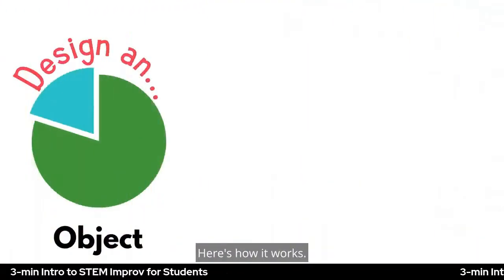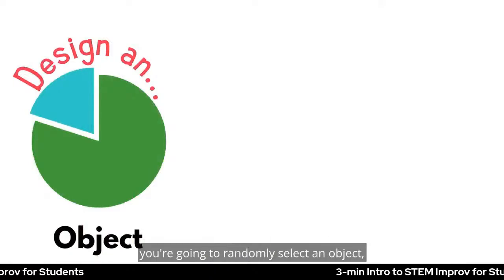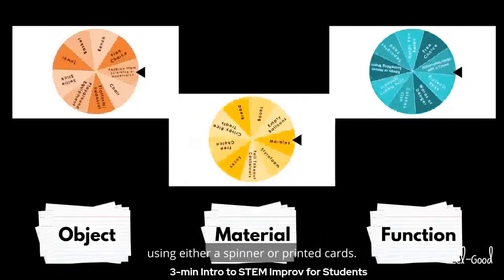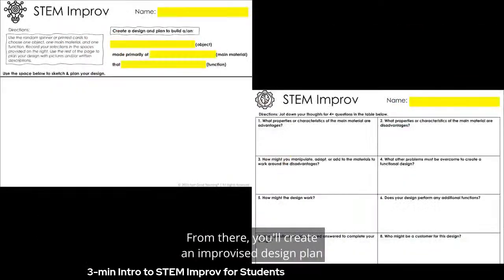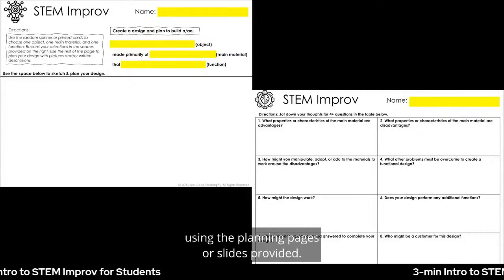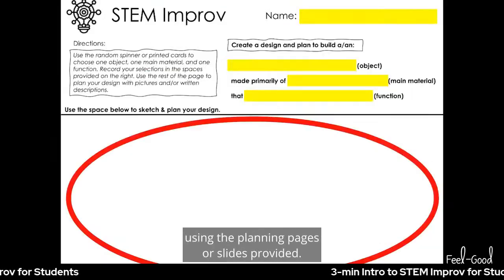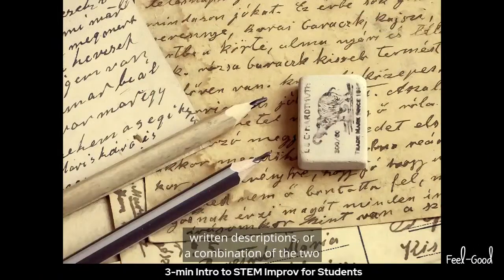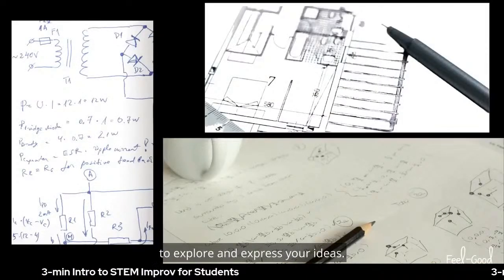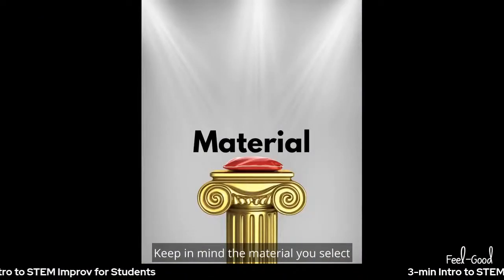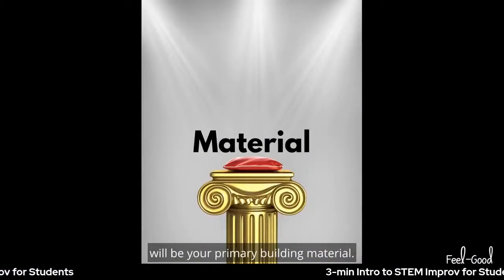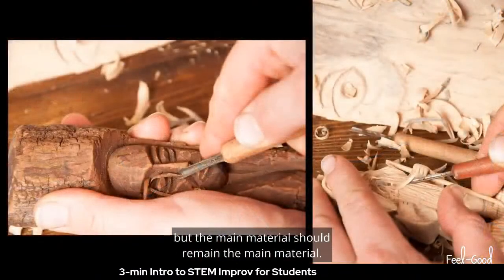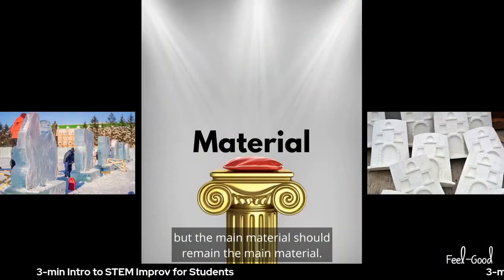Here's how it works. In this STEM Improv exercise, you're going to randomly select an object, a main material, and a function using either a spinner or printed cards. From there, you'll create an improv design plan using the planning pages or slides provided. In the open space, you can use drawings, written descriptions, or a combination of the two to explore and express your ideas. Keep in mind, the material you select will be your primary building material — you may supplement or adapt it, but it should remain the main material.